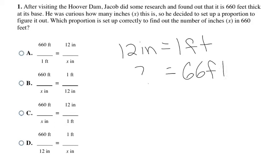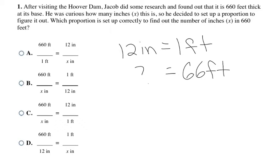We want to keep everything lined up: 12 inches in one foot forms one ratio, and we need feet on the top and inches on the bottom in both fractions — or vice versa, as long as it's consistent. Looking at choice A, it has feet on the top left and inches on the top right, so the units don't align — it can't be A. Choice B has feet on top and inches on the bottom in both spots.